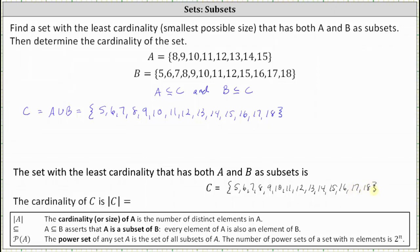The cardinality of set C is 14, because there are 14 elements in set C.